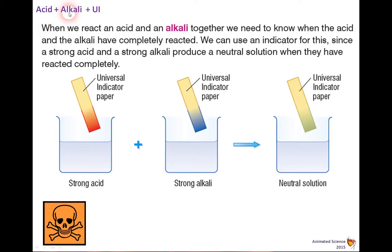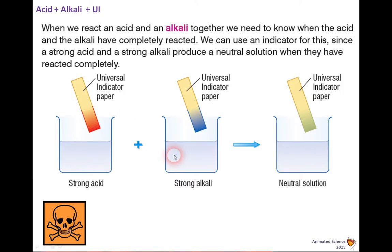When we react an acid and an alkali together, we need to know when they've completely reacted, so we use an indicator. A strong acid and a strong alkali produce a neutral solution when fully reacted — blue and red go together to form green with universal indicator. You can do a simple experiment pouring acid into alkali with liquid UI, and when it turns green you've neutralized. A more accurate method uses a burette and titration.